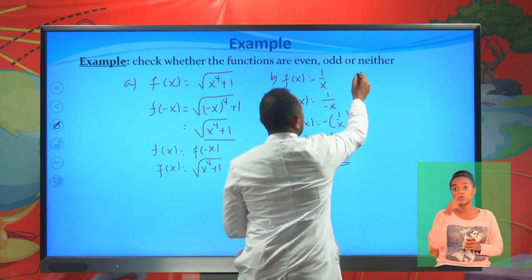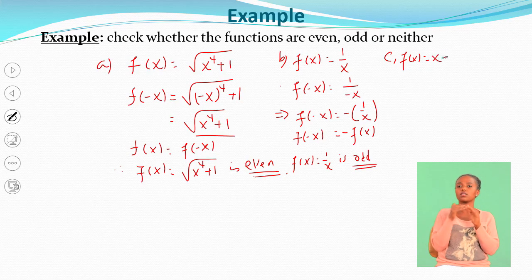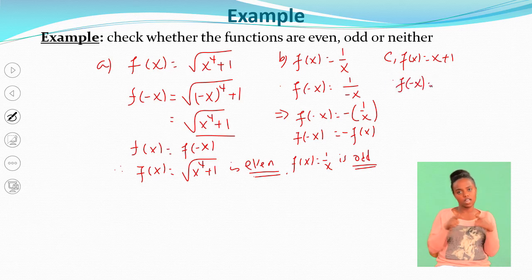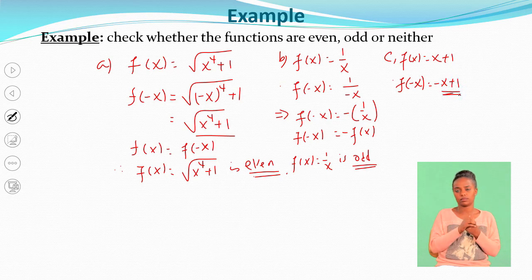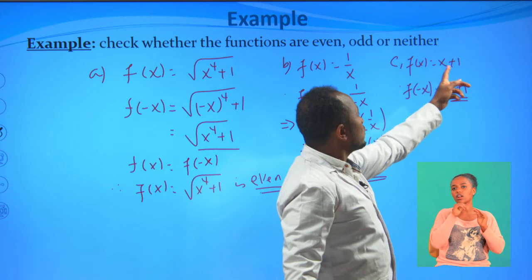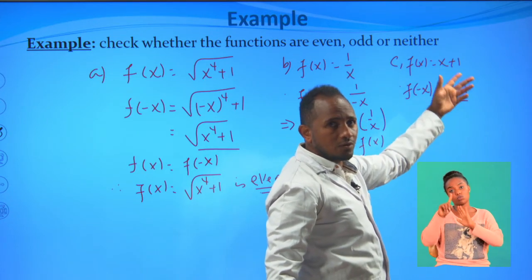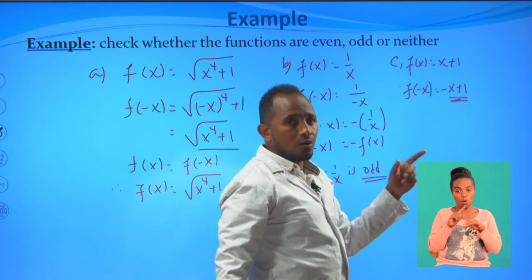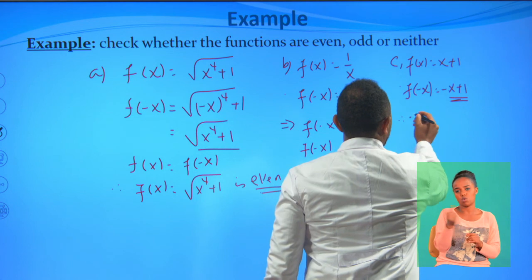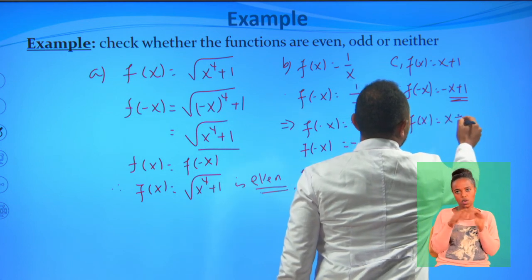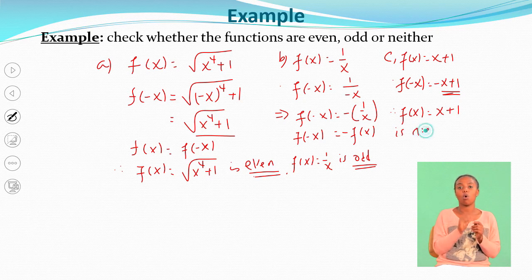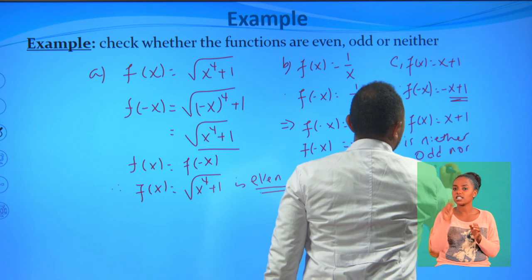For f(x) = x + 1: f(-x) = -x + 1. This is neither equal to f(x) = x+1 nor equal to -f(x) = -(x+1) = -x-1. Therefore, f(x) = x + 1 is neither even nor odd.